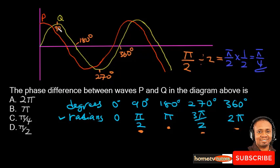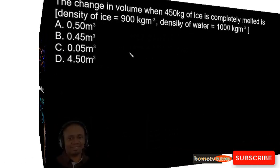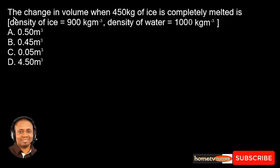So the phase difference between waves P and Q is π/4. Let us check the answer options — answer option C is the right answer. Thank you for watching.